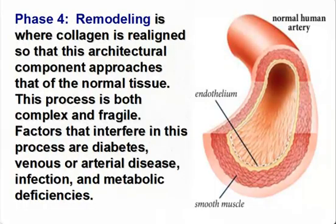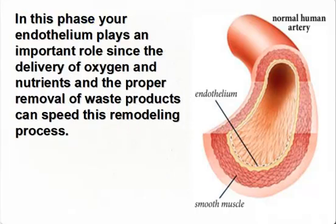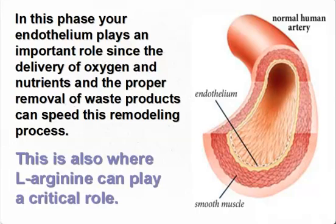Phase four, remodeling, is where collagen is realigned so that this architectural component approaches that of the normal tissue. This process is both complex and fragile. Factors that interfere in this process are diabetes, venous and arterial disease, infection, and metabolic deficiencies. In this phase, your endothelium plays an important role since the delivery of oxygen and nutrients and the proper removal of waste products can speed this remodeling process.